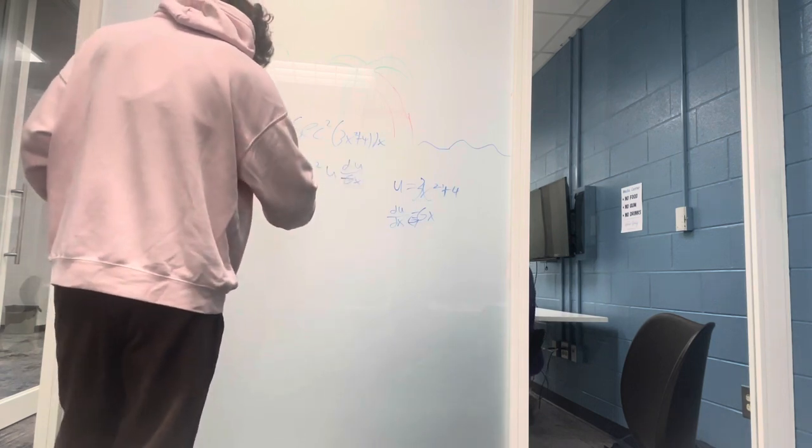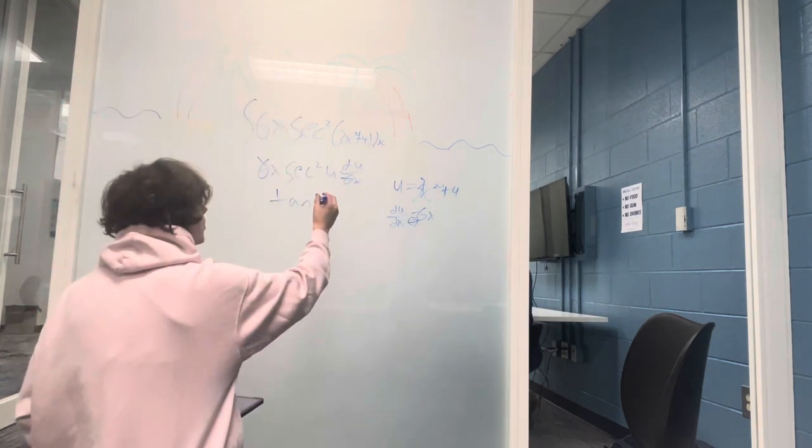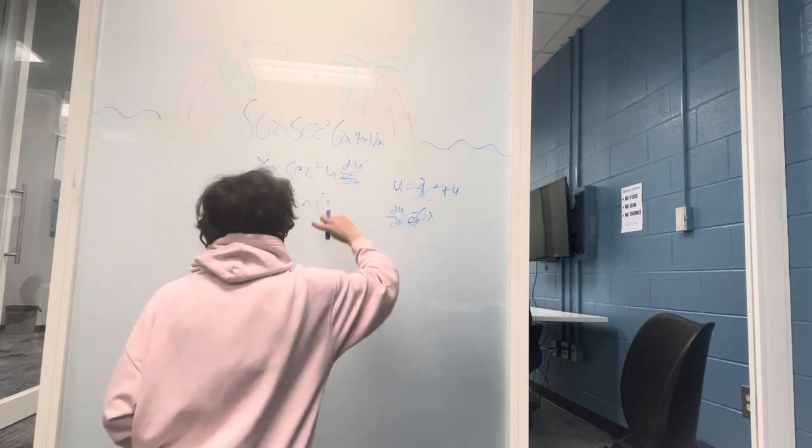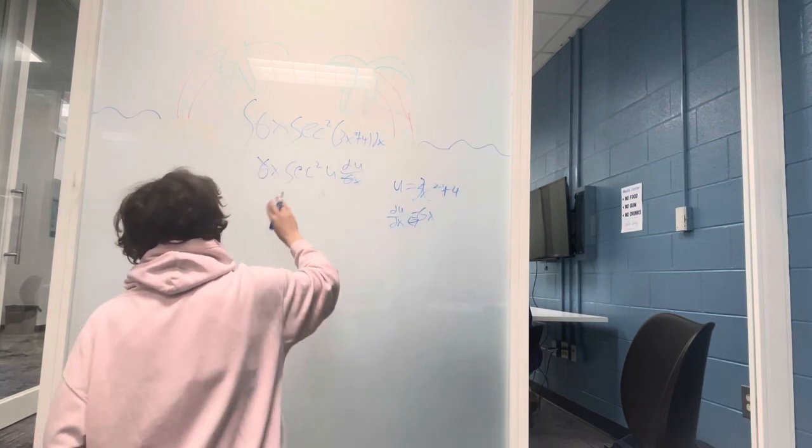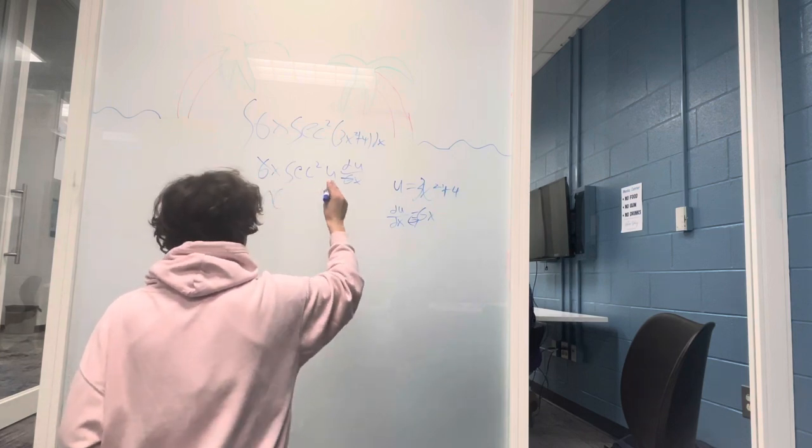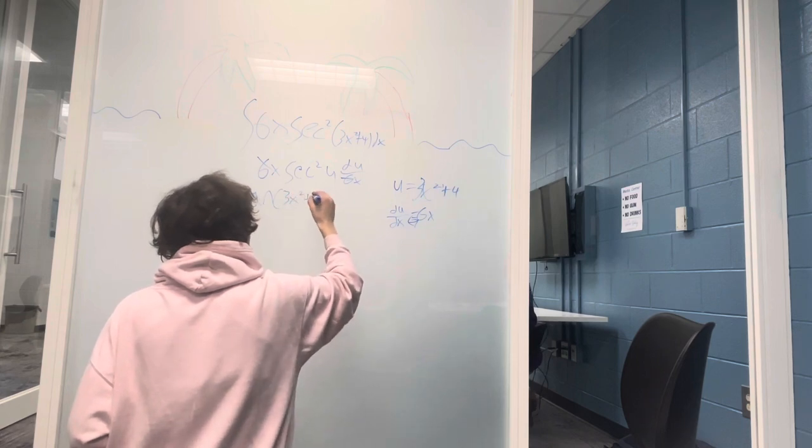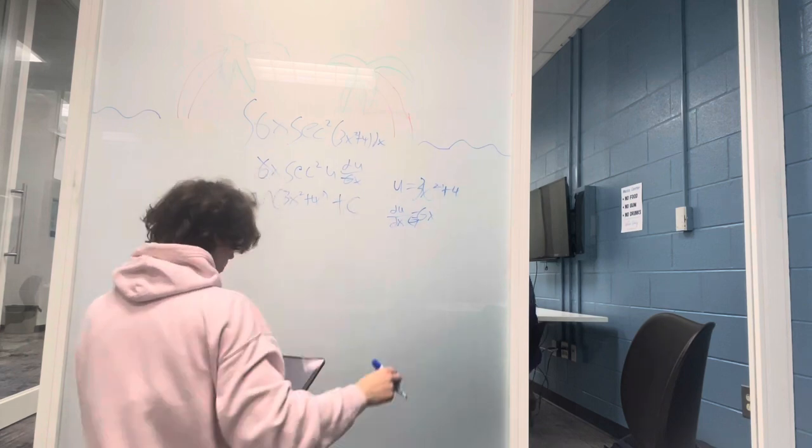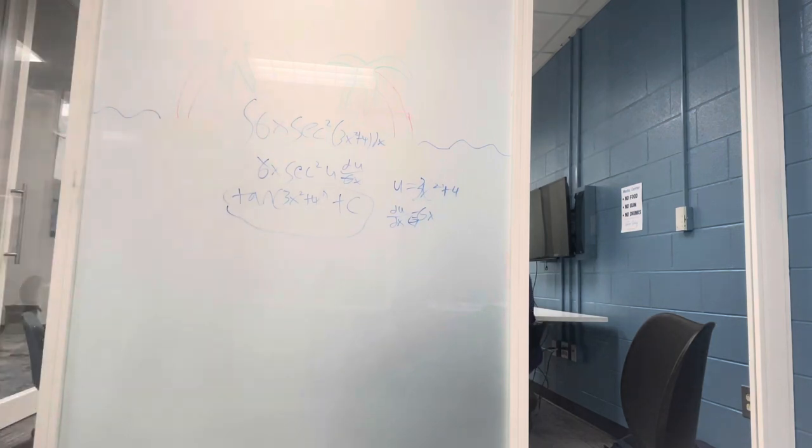Which is actually tan. But remember, we're not done because we haven't put the u back in. Oh, that's too big. I'm actually going to get rid of that whole thing. Okay, there we go. Tan. And we're going to put the u back in: square root of 3x squared plus 4. But we're still not done because we have to put in plus C. Now we have our problem there.